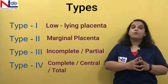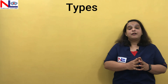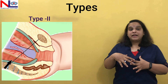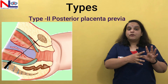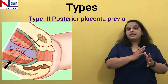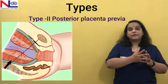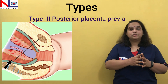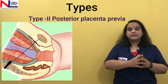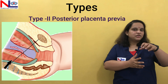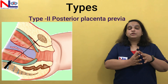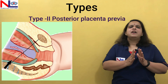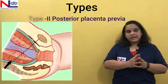Out of these, type two posterior placenta previa is very dangerous. The placenta can be attached anteriorly or posteriorly, but when attached posteriorly it lies over the sacral region, reducing the anteroposterior diameter at the pelvic inlet brim. When this diameter decreases, the fetal head or presenting part cannot engage downward. So type two posterior, as well as types three and four, are the dangerous ones.